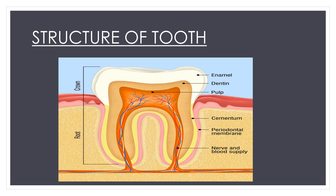As you can see, enamel is the hardest white outer part of the tooth. Enamel is mostly made up of calcium phosphate and rock-hard minerals. The next layer is dentine, which you can see in the diagram.